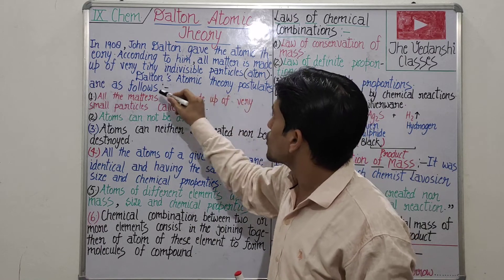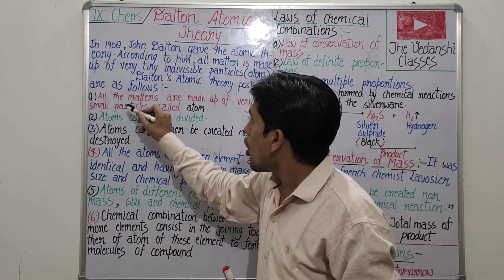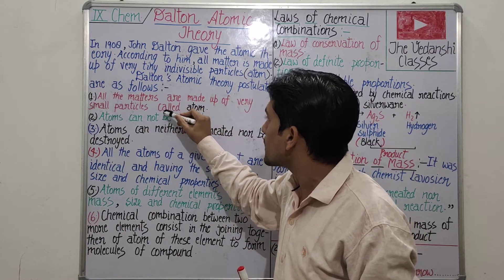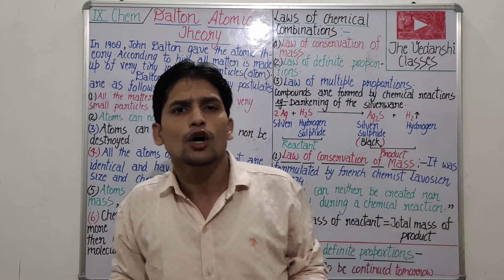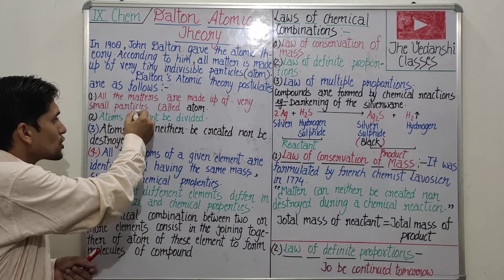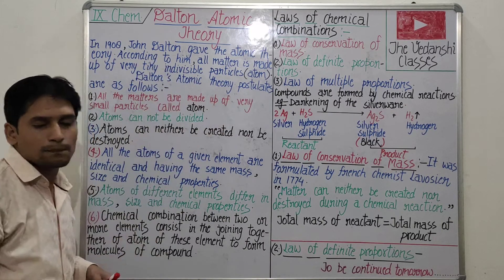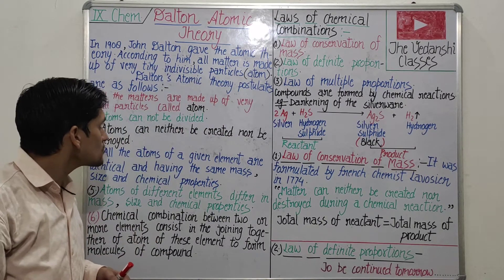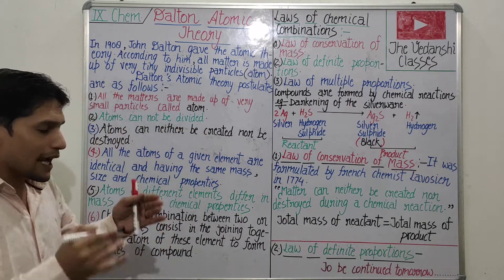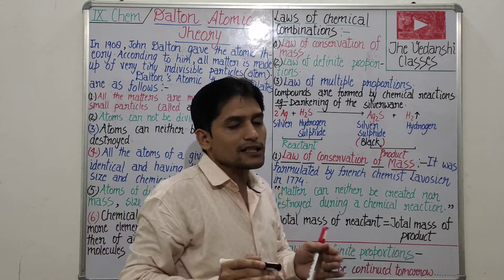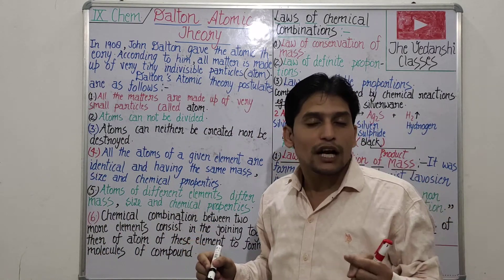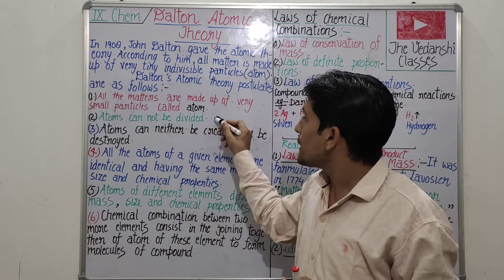Dalton's atomic theory postulates are as follows. First postulate: all matters are made up of very small particles called atoms. Second postulate: atoms cannot be divided, according to Dalton. But according to the modern atomic theory, atoms can be divided.